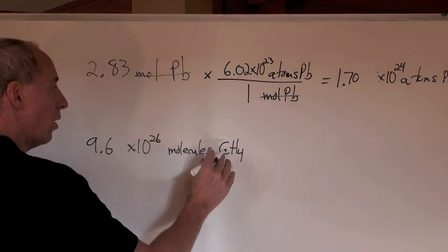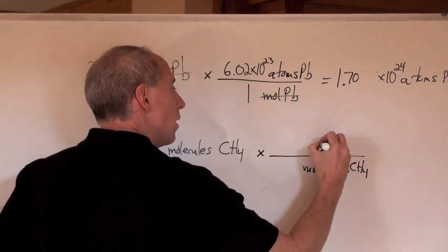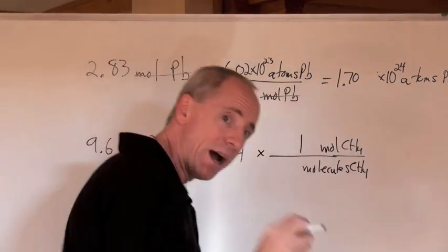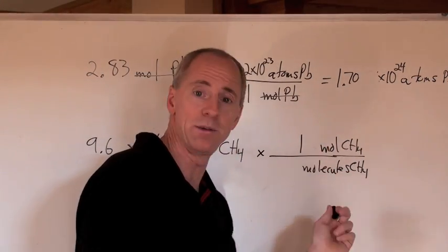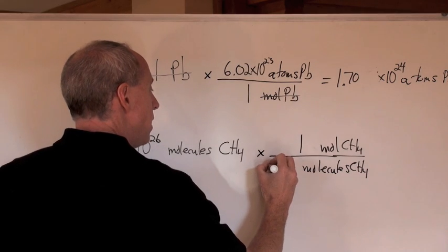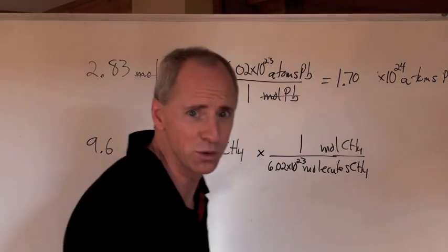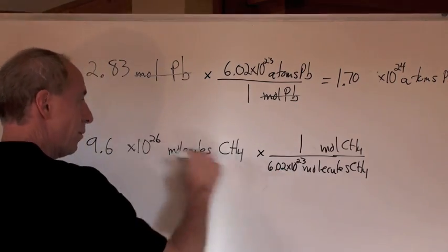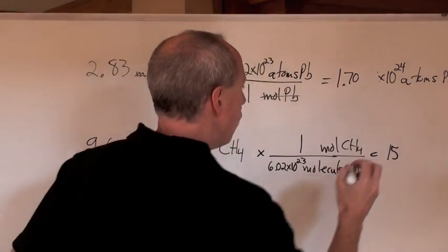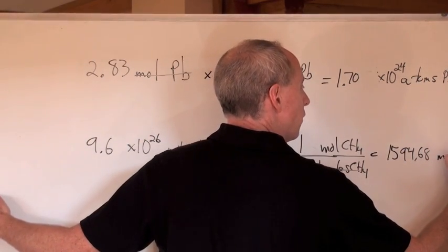So 1.96 times 10 to the 26 molecules of methane — you don't want molecules of methane. The question is how many moles. There is a relationship: for every one mole, there are 6.02 times 10 to the 23 molecules. You divide by 6.02 times 10 to the 23. When molecules of methane cancel, you get moles of CH4. The calculator gives 1,594.68.